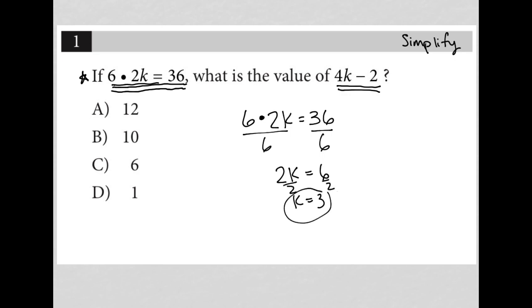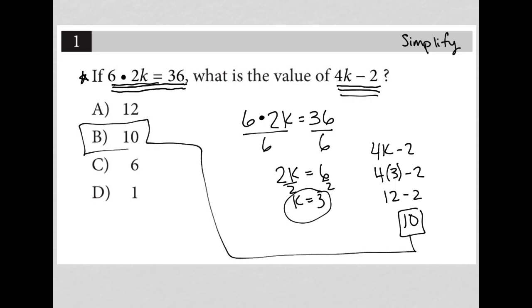The question asks not what k is, but what 4k minus 2 is. Now that I know k is 3, this becomes 4 times 3 minus 2, which is 12 minus 2, which is 10. The correct answer is choice B.